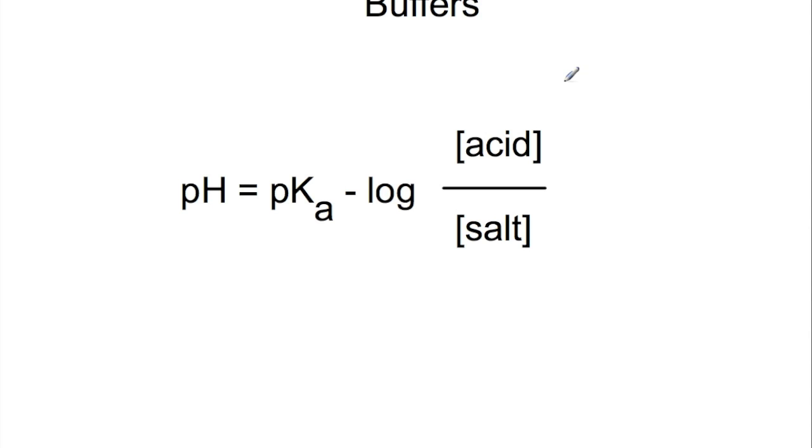They are usually made of a weak acid and a salt of the acid. They can also be made with weak bases and the salts of the base. The pH of the buffer is determined by the pKa of the weak acid which is linked to its dissociation and also the ratio of the acid to salt concentration.